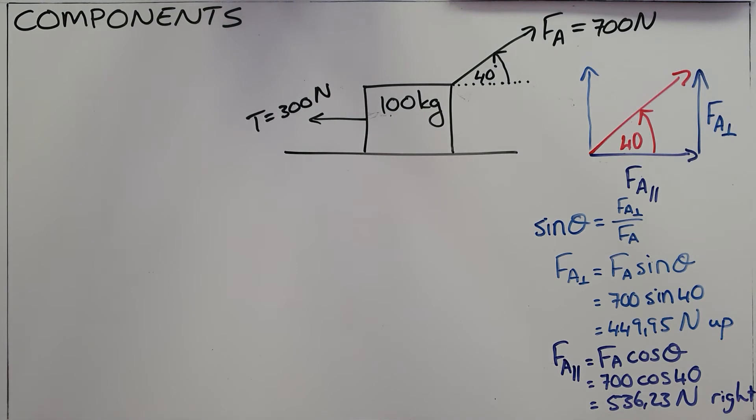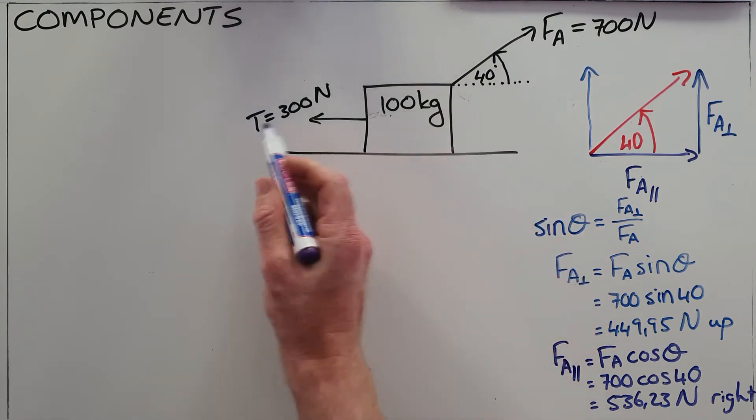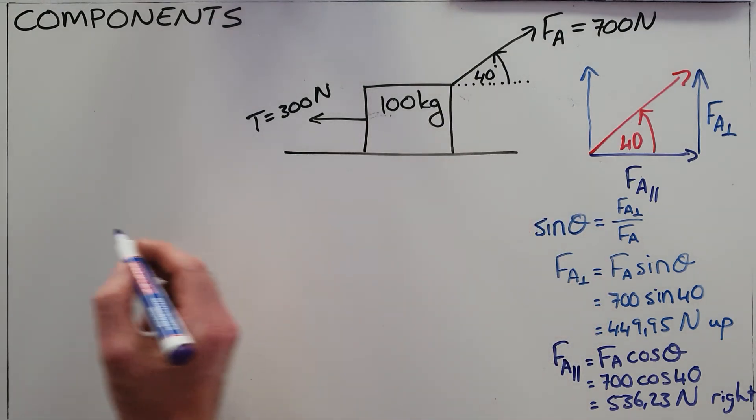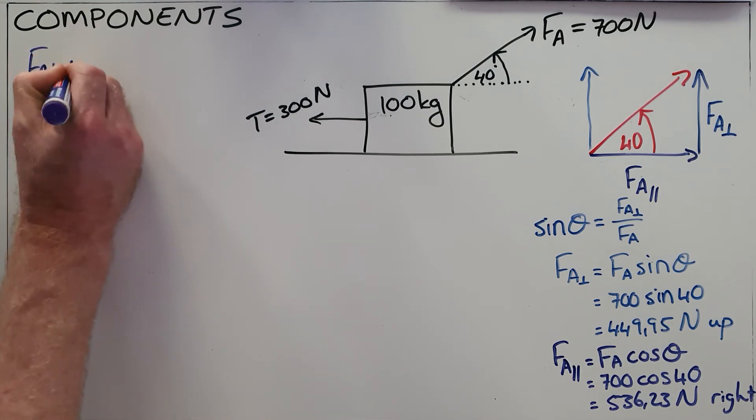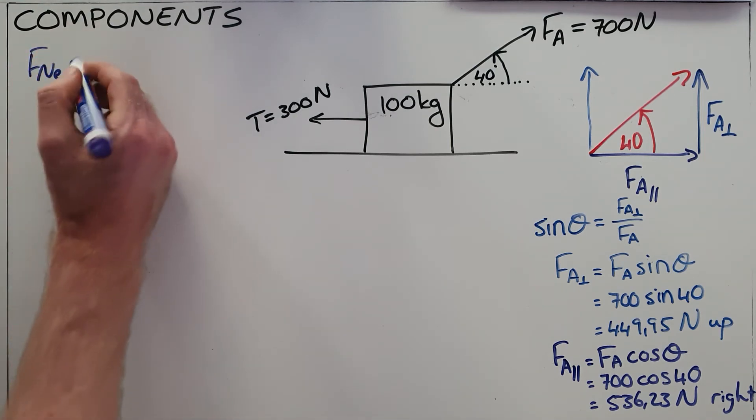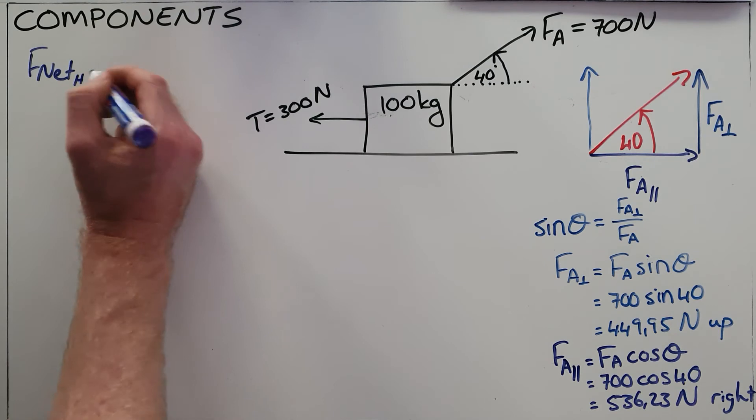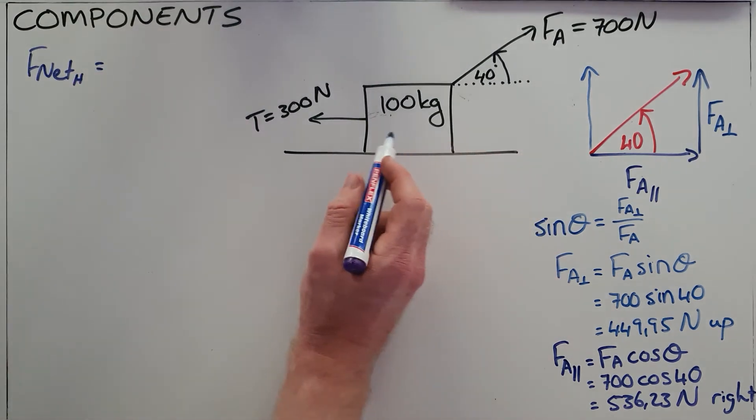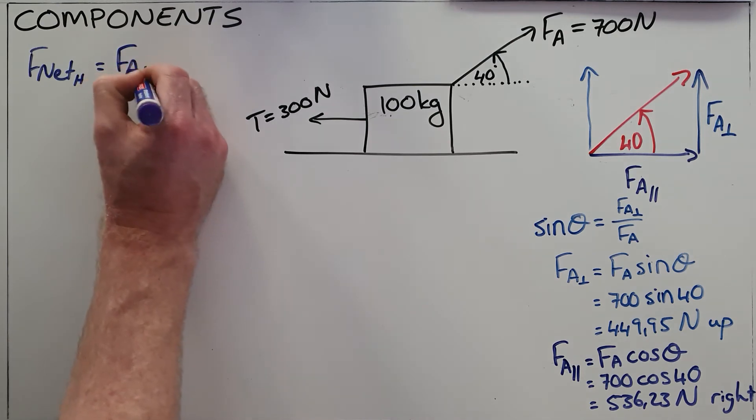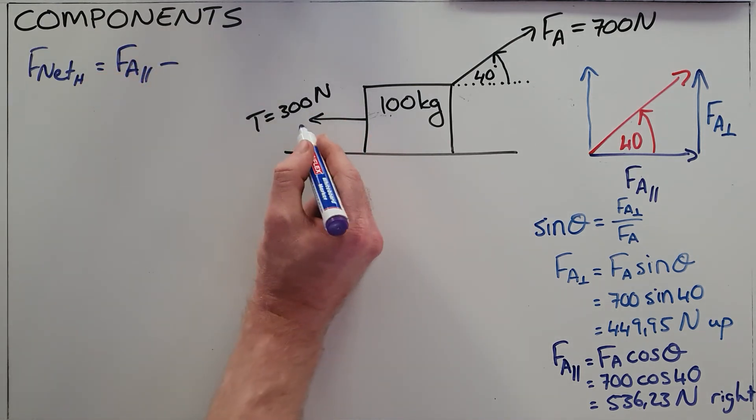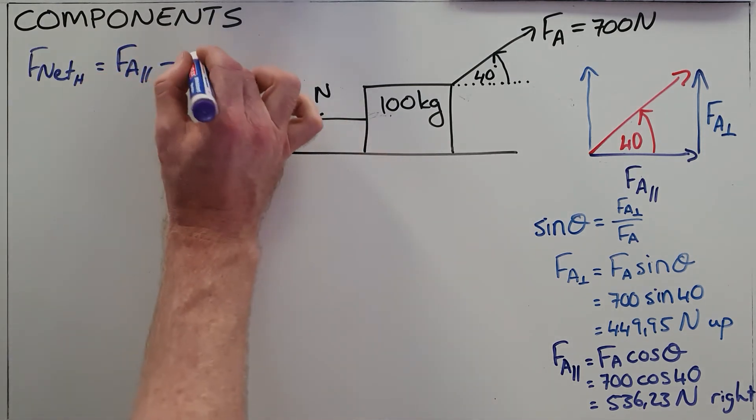Now that we have resolved this vector into components, we can now easily compare, because we can now look and see that there are only two forces acting horizontally. We can say that the net force horizontal or parallel is equal to the force pulling it to the right, in this case that is F_A parallel, minus the force pulling it to the left, which is tension.